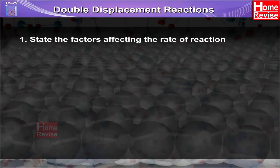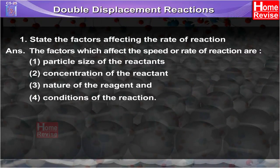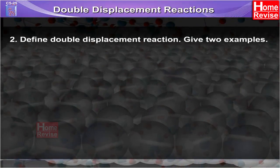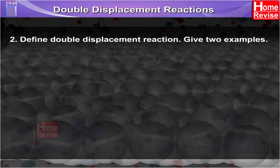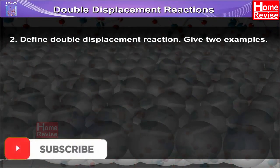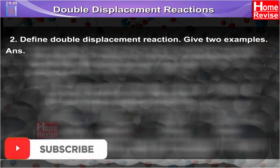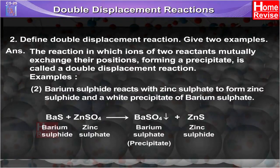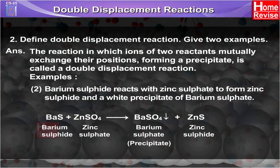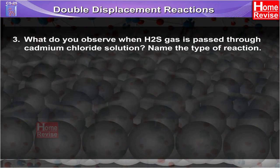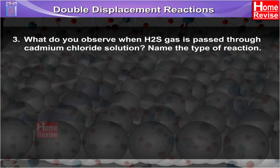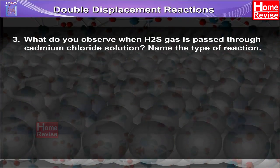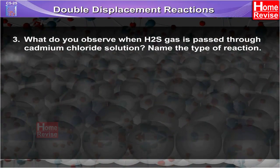Students, you may get the following questions based on this topic. One: state the factors affecting the rate of reaction. Two: define double displacement reaction and give two examples. Three: what do you observe when H2S gas is passed through cadmium chloride solution? Name the type of reaction.